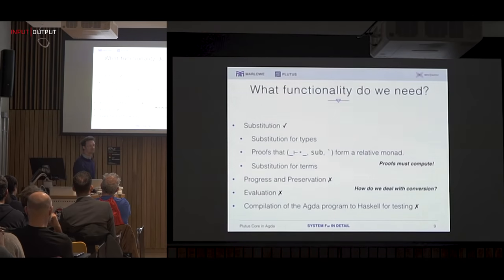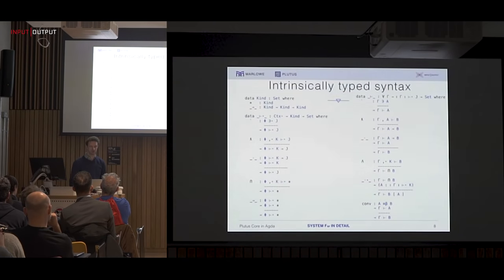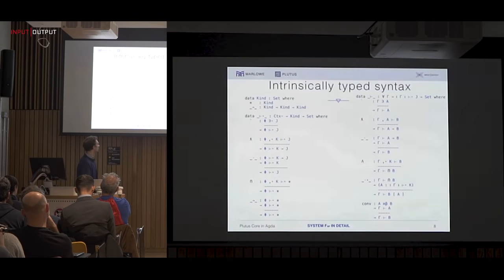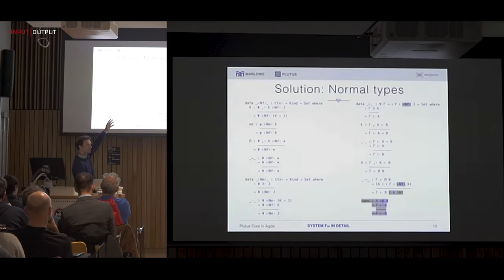However, we run into a halt here: we can't prove progress and preservation for this system, because we don't really know what to do with the conversion rule — we need to somehow push it through the terms and it's not clear how. But there is a solution: we can normalize the types. Here is the presentation of the type system again, but with normalized types.